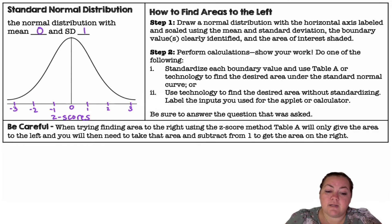So when trying to find the area to the right, using the z-score method or table A, table A only gives you the area to the left. So you will need to take the area and subtract it from 1 to get the area on the right side.